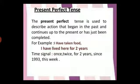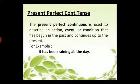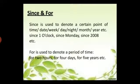The present perfect continuous tense is used to describe an action, event, or condition that has begun in the past and continues up to the present — for example, 'It has been raining all day.' We use 'since' and 'for' in perfect and perfect continuous tenses. 'Since' is used to denote a certain point of time — a certain date, week, day, night, month, year, etc. — while 'for' is used to denote a period of time.